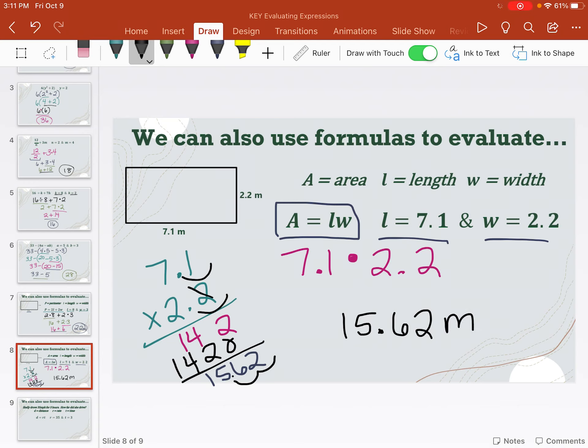And units, again, were meters. But this time it's area. So remember, area is always squared. Area, square, area. So meters squared for our answer.